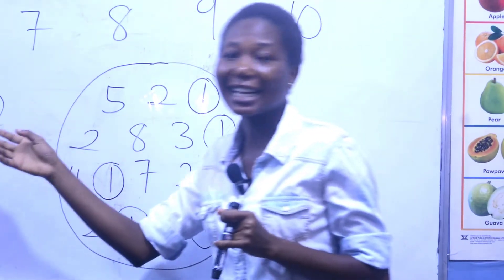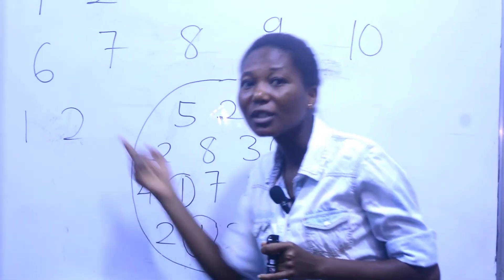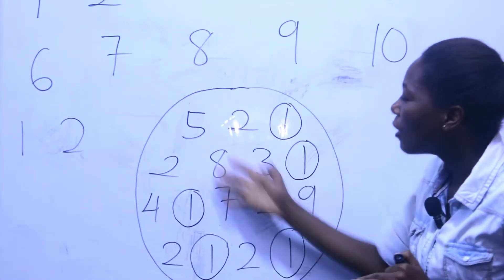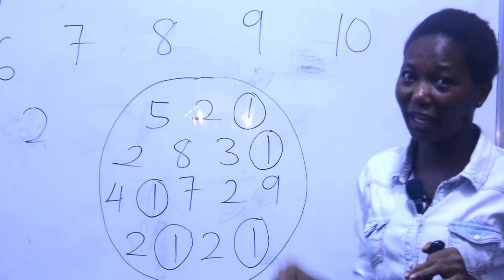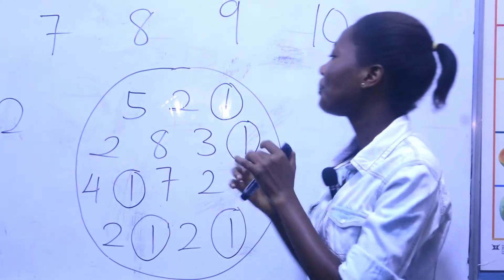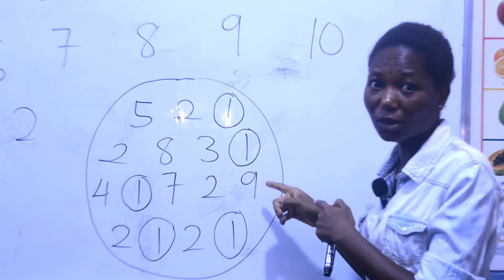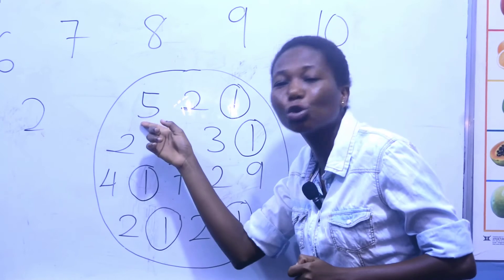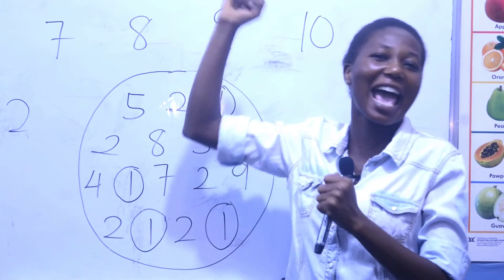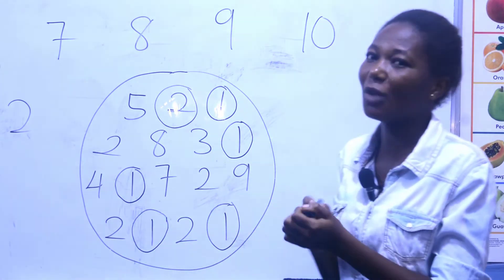Let me hear you saying it — two — again — two — very good! So we are going to find two from these numbers and then we circle it. We are going to identify the number from this circle. Is this two? No. Is this two? Yes — very good! Now you circle it. You guys are really doing well.